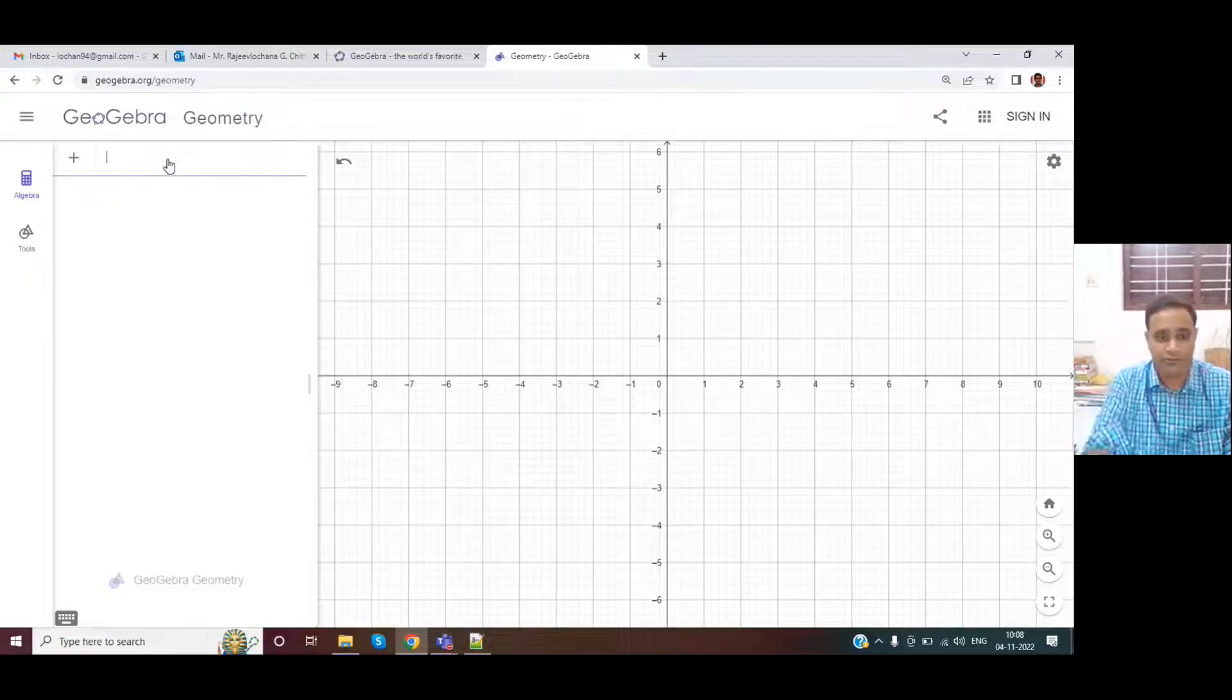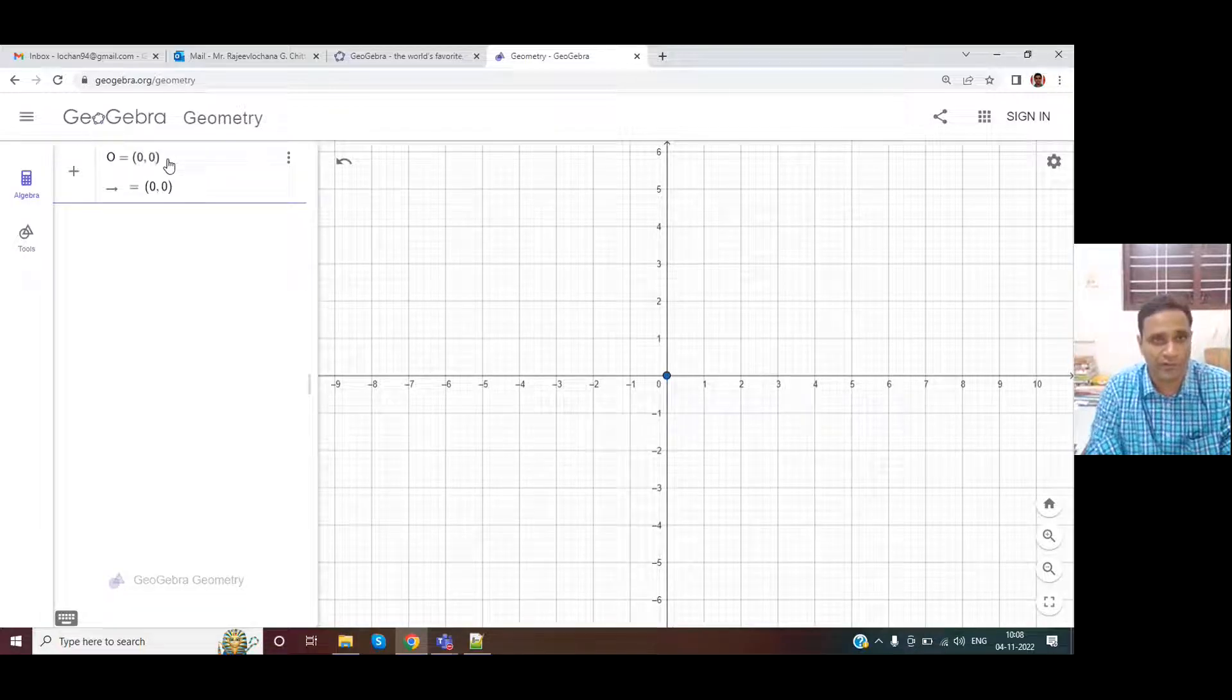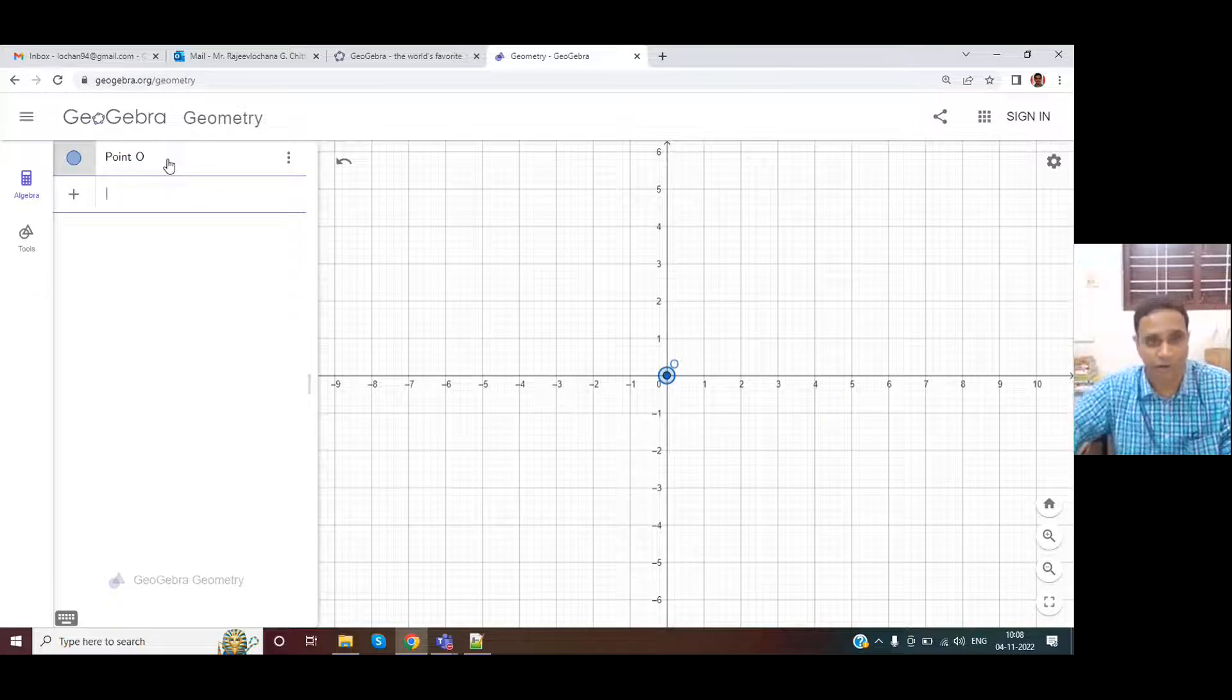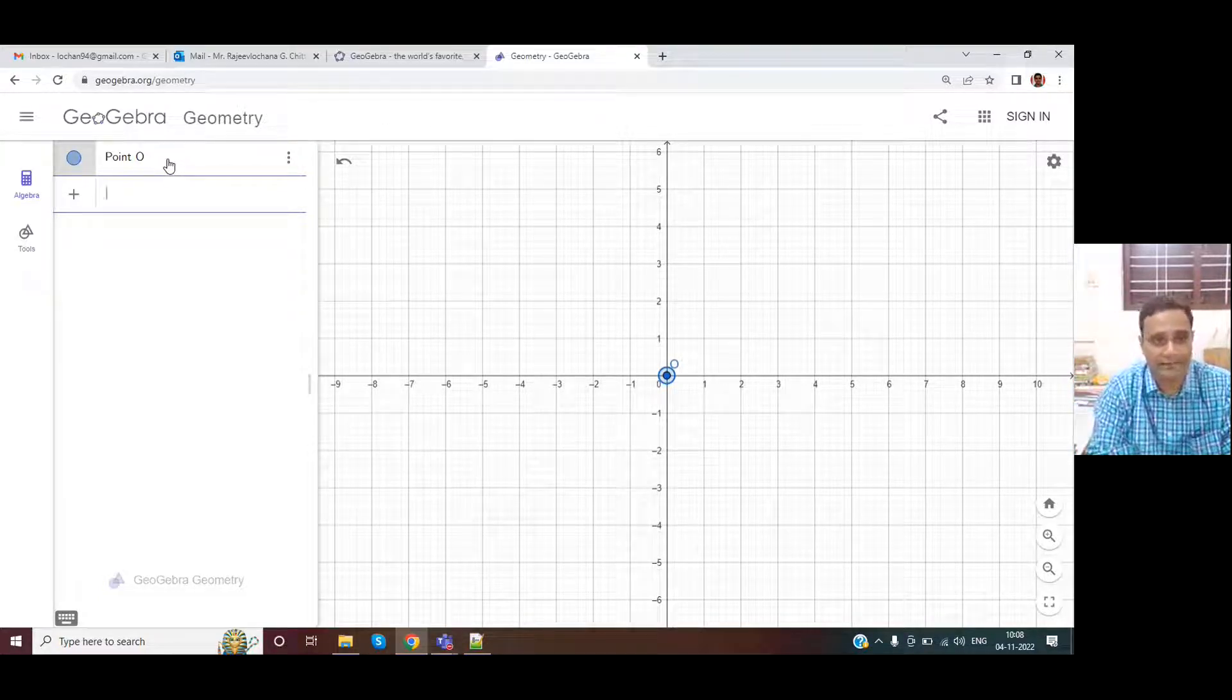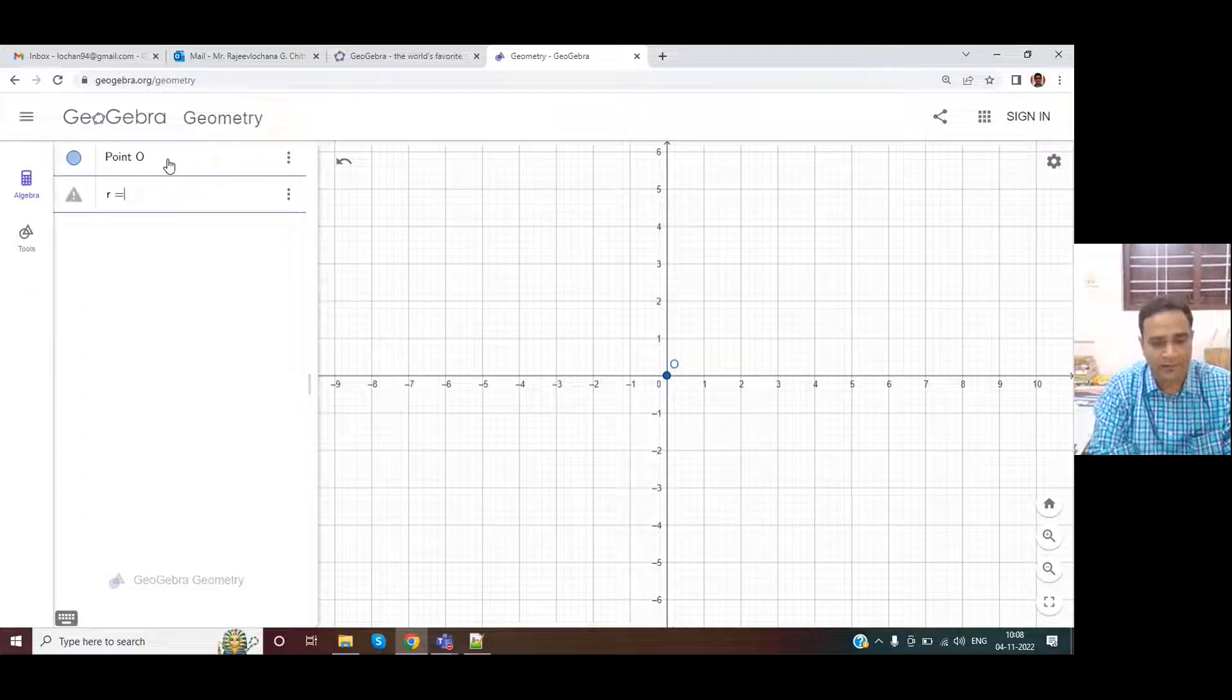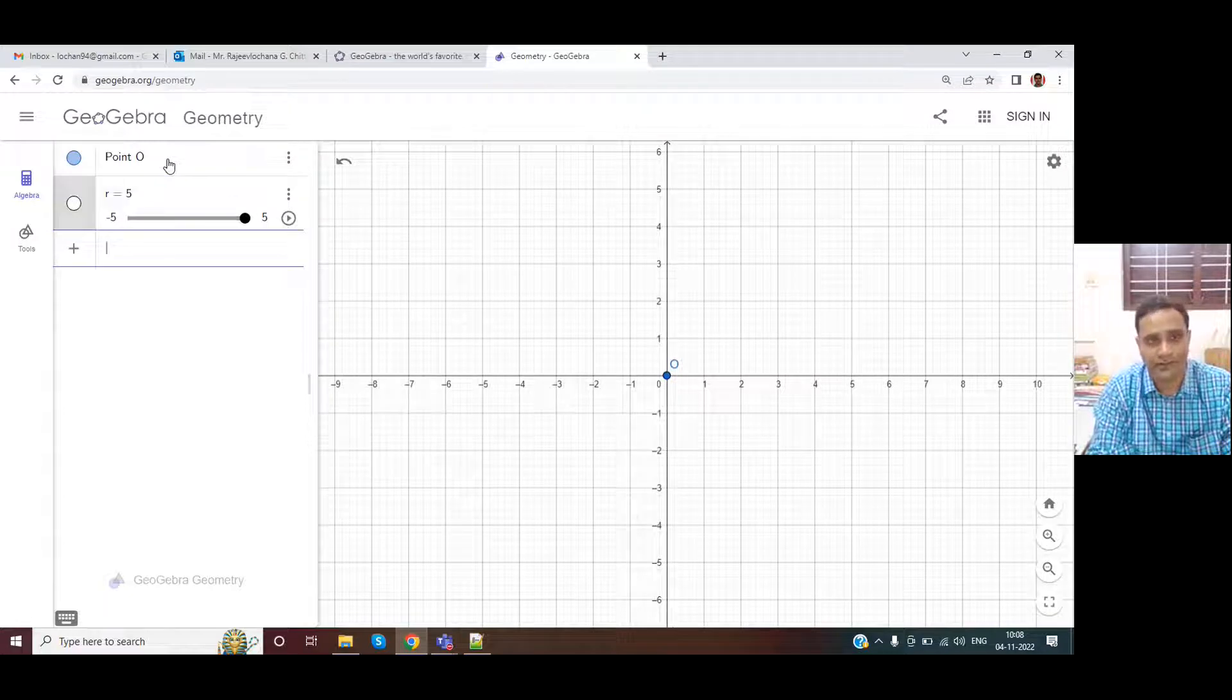So what we will do is we would want a point O. By default, there is a point O, which is 0,0. Let me do that. So we have a point O. And let us have a radius as R. Let's say R is equal to 5. So that is the radius.